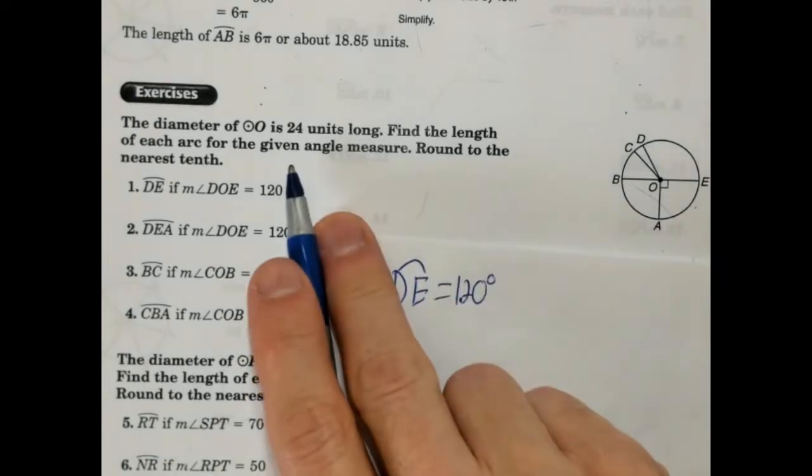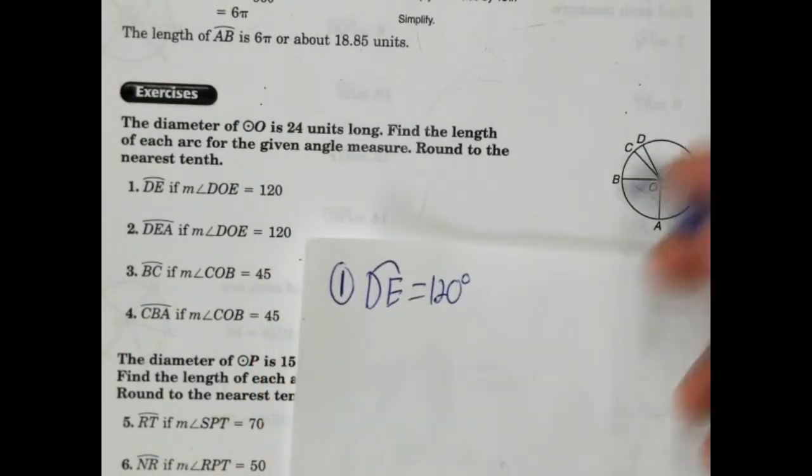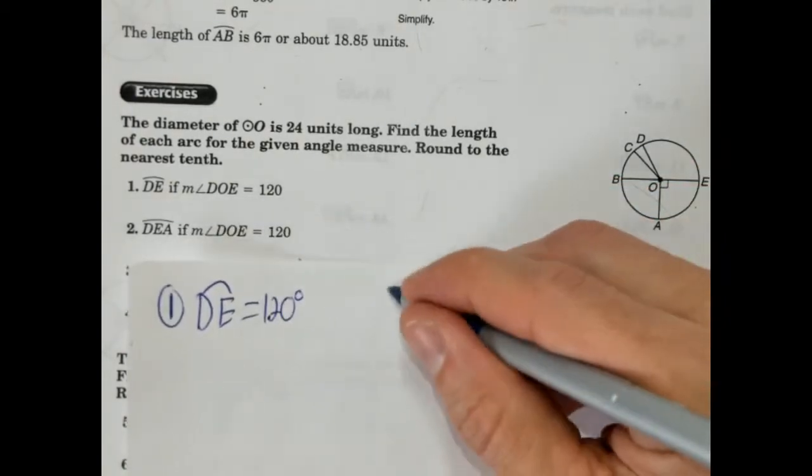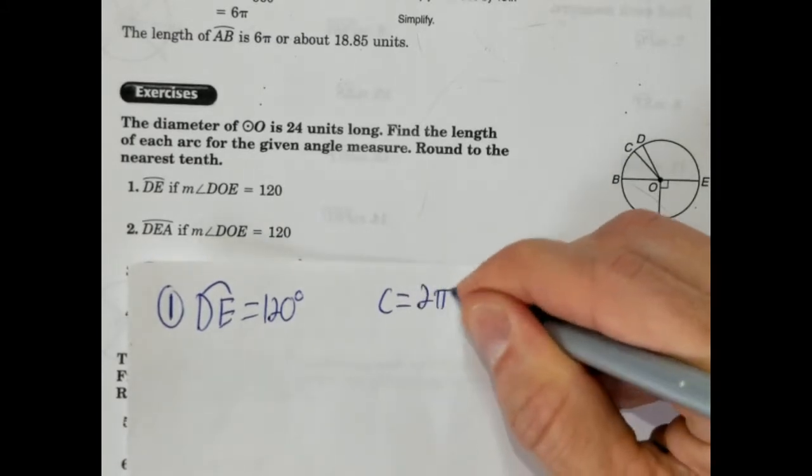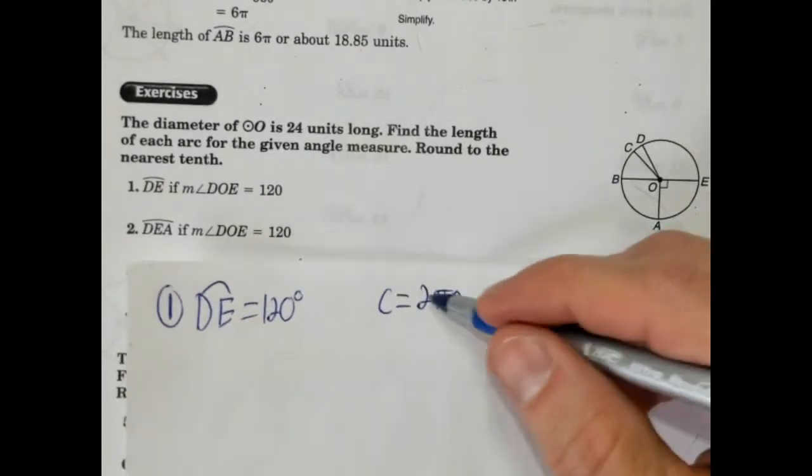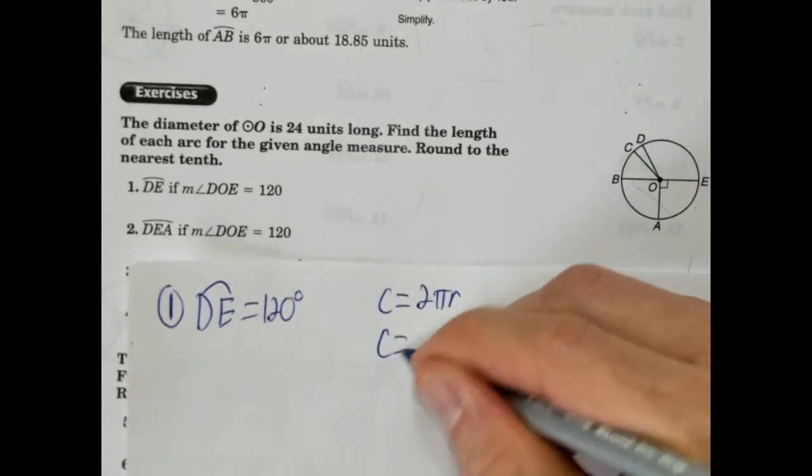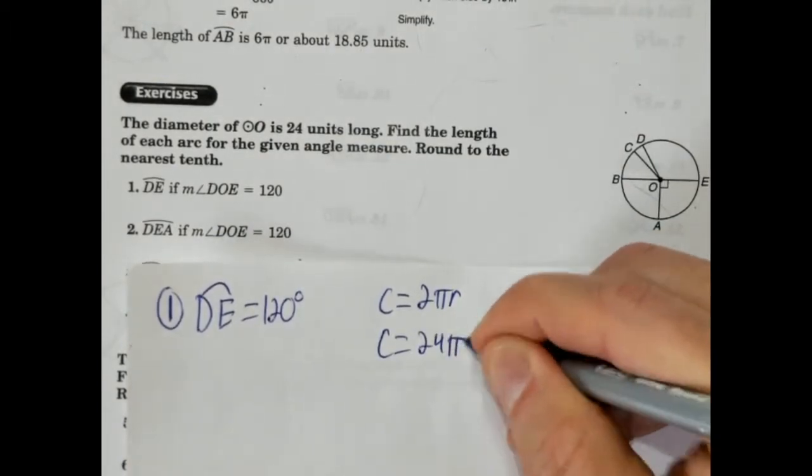Now, we know that the diameter is 24 inches long. So let's go ahead and find the circumference. We're going to need the circumference to do this. So the circumference is 2 pi R. We know the diameter is 24, so that's 2R. So we can actually plug it into the 2R. So the circumference is actually going to be 24 pi.